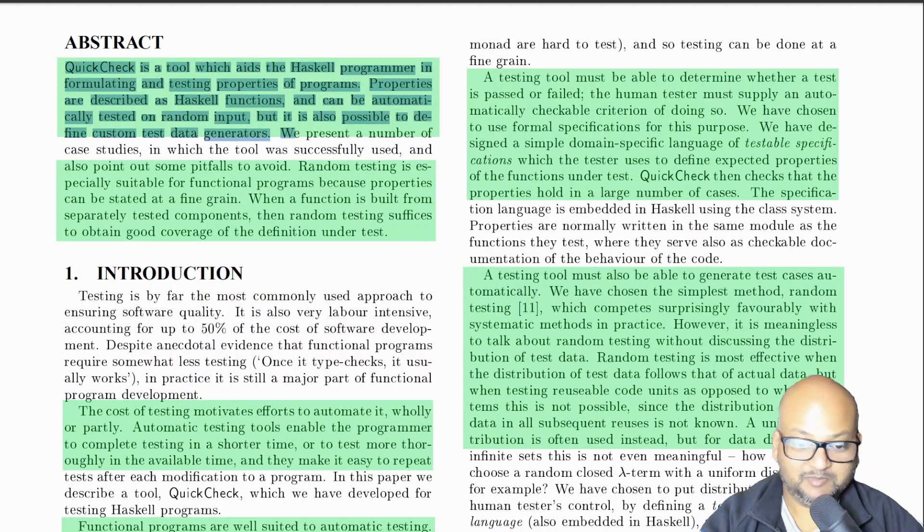As the name implies, the goal of this approach is to be able to specify the properties of the code under test and use that to drive testing as opposed to having to manually write test cases for every scenario. Testing on random inputs is a key idea that enables this and we'll see how that works in detail in a bit.